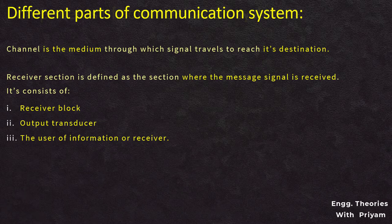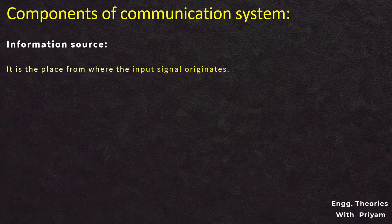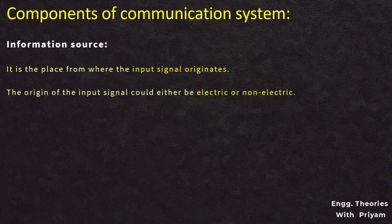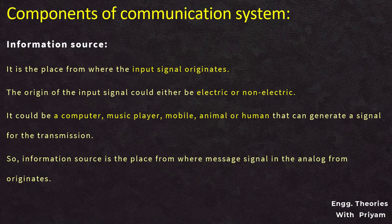The first element of the block diagram is the information source. The information source is the place where the input signal originates. The origin of the input signal could be either electric or non-electric. It can be an animal or a human that can generate a signal for transmission. So the information source is the place from where the message signal in analog form originates.